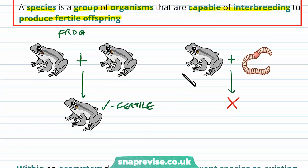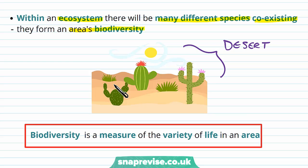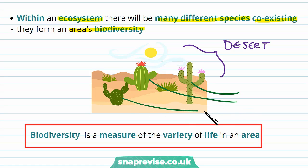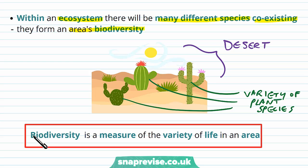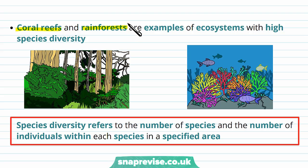So the two organisms have to be part of the same species to produce fertile offspring — this is how we classify organisms. Within an ecosystem there will be a variety of different species coexisting in the same habitat, and this forms an area's diversity. For example, the ecosystem of a desert contains lots of different features: the sand, the ground, certain levels of water, the air, and heat levels. Within that ecosystem we can see a variety of different species of plant and cacti. Essentially, biodiversity is a measure of the variety of life in an area — a garden full of various plants, insects and birds would have high biodiversity, while a patch of desert growing only one species would have very low biodiversity.